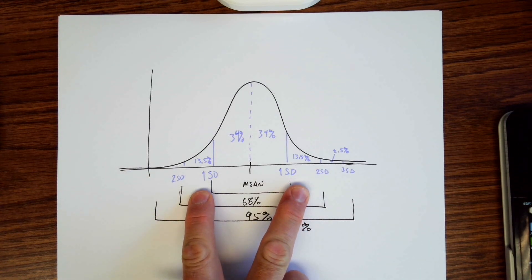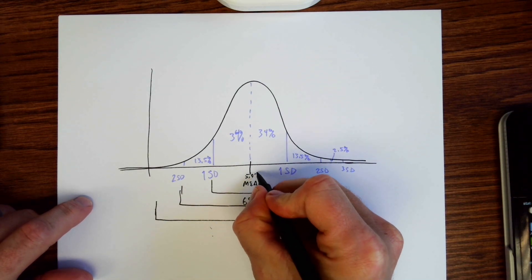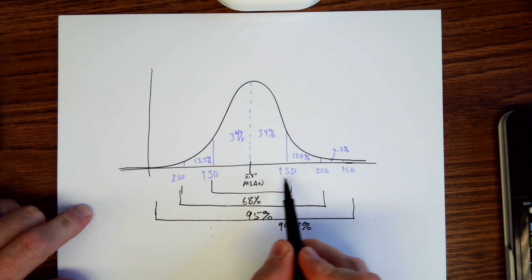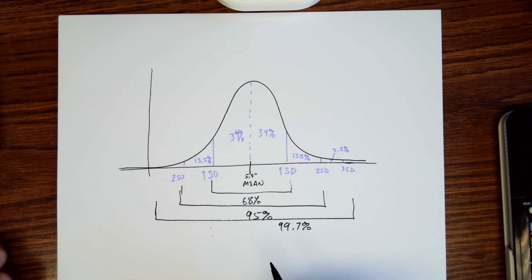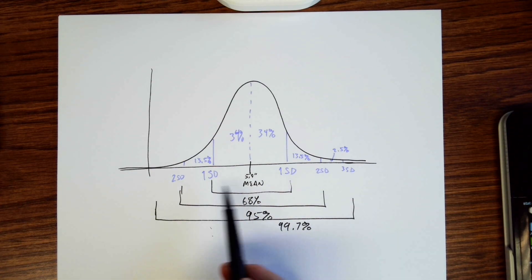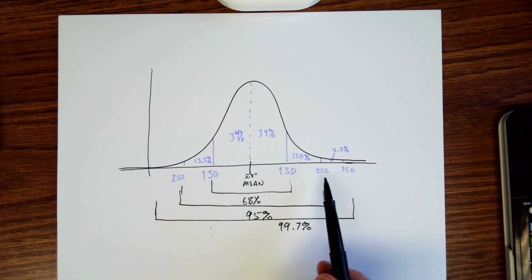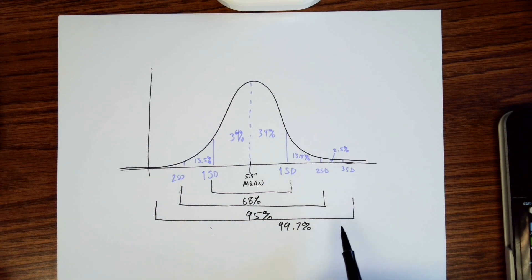If the standard deviation is two inches and the mean is five feet nine inches, then two standard deviations above takes you up to 5'11", and two standard deviations below takes you down to 5'7". So 68% of the US male population lies within that range. Then 5'11" plus another two inches takes you up to 6'1", meaning 95% of the male population is between 5'5" and 6'1". That covers most males.